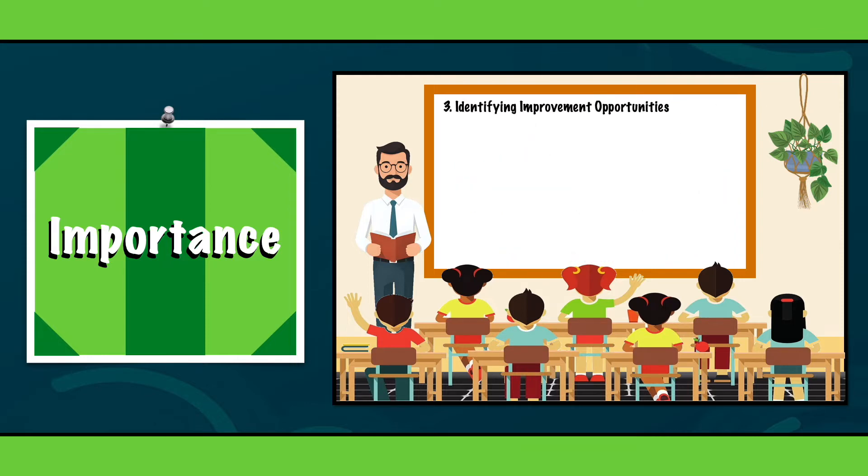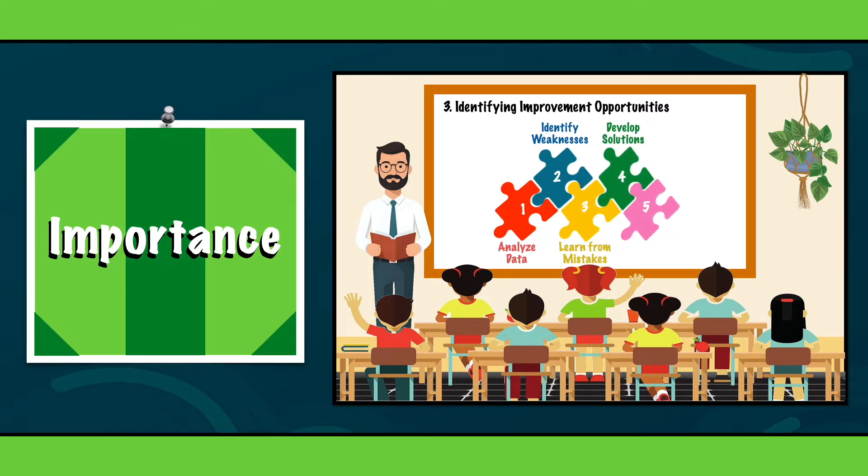Third, identifying improvement opportunities. SLCA helps to identify opportunities for improvement. By pinpointing the stages of the life cycle with the most significant impacts, businesses can focus their efforts where they will make the most difference, be it in sourcing sustainable materials, optimizing manufacturing processes, or enhancing end-of-life recycling.